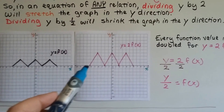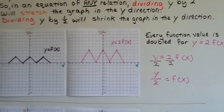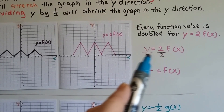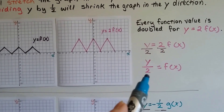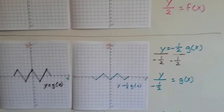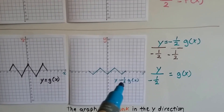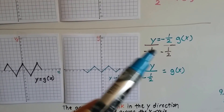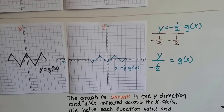We have y equals f(x), and here we have y equals 2 times f(x), so every function value is doubled because of that 2. If we divide both sides of this equation by 2, we get y divided by 2 equals f(x). And here we've got y equals g(x). Now we've got y equals negative half times g(x). We can divide both sides by negative half and get y divided by negative half equals g(x).